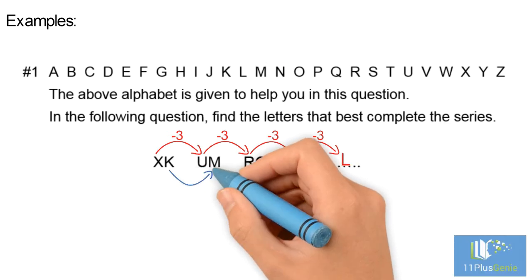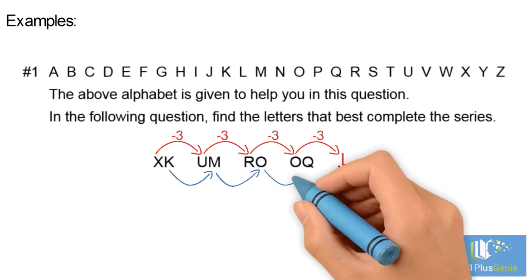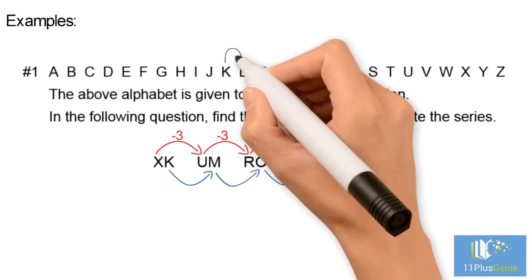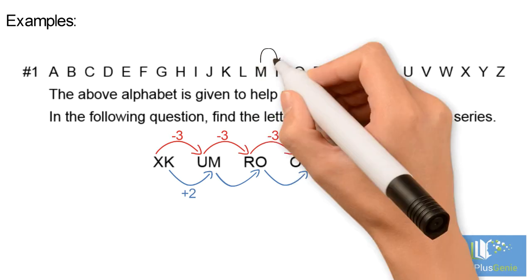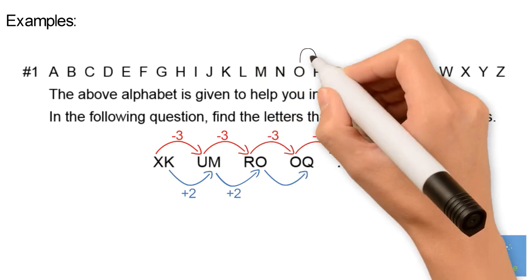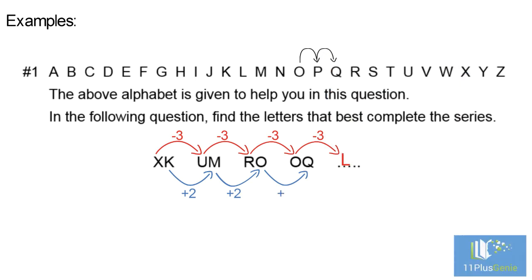We now need to find the pattern for the second letters of the pairs. From K to M is moving forwards two places, so it is plus 2. From M to O is plus 2 again, and from O to Q is plus 2.